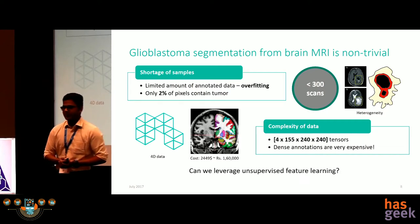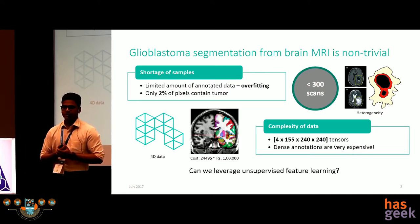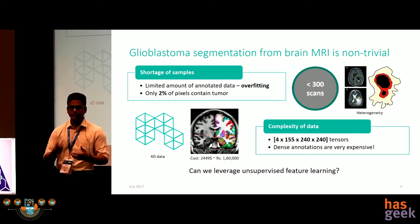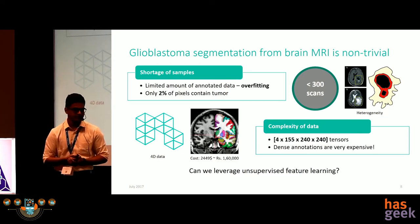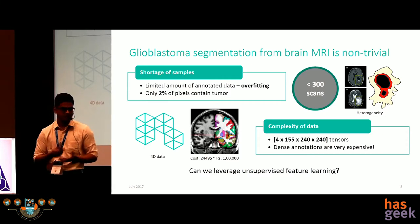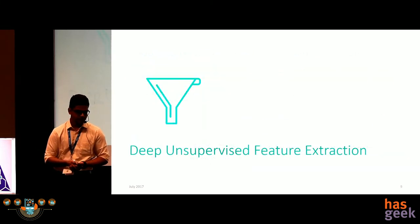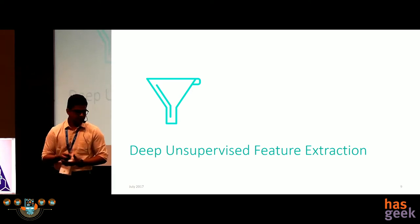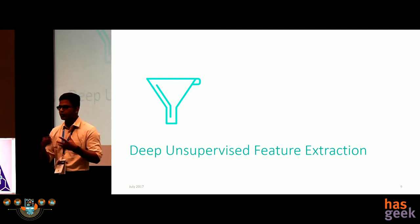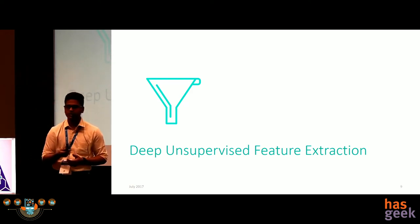This got us thinking: can we leverage unsupervised learning, where you don't depend on labeled data? Can we use unsupervised learning to learn the underlying structure of these brain scans and come up with better diagnosis and segmentations? This brings me to the first part of the talk — deep unsupervised feature extraction. How do you train deep networks in an unsupervised manner?